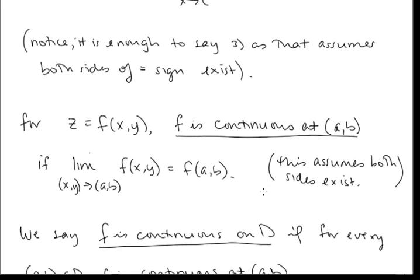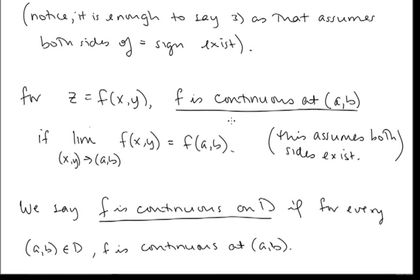Similarly, we have a definition of continuity for functions of two variables. For z = f(x, y), we say f is continuous at the point (a, b) if the limit as (x, y) goes to (a, b) of f(x, y) equals f(a, b). This assumes both sides exist — the limit must exist and the function evaluation must exist. We say f is continuous on D if f is continuous at every point in D.